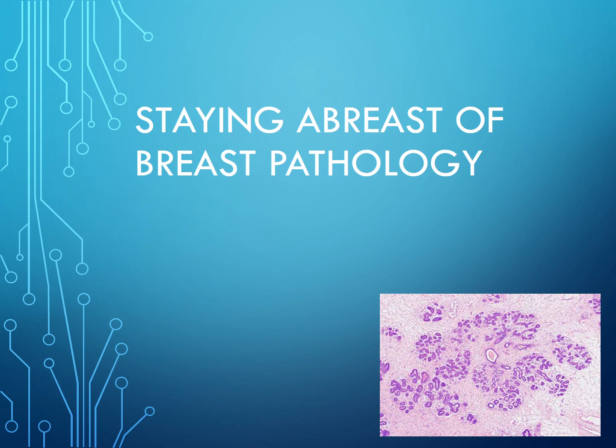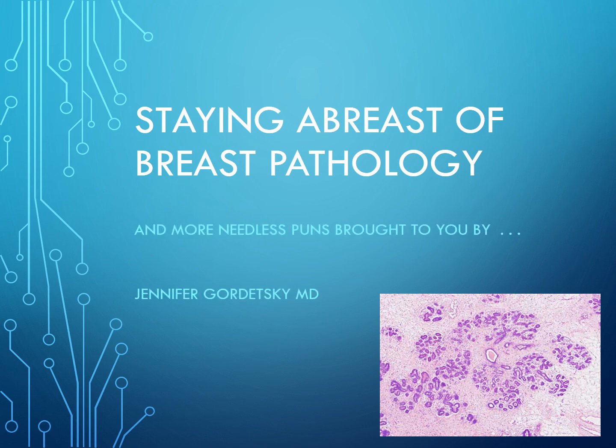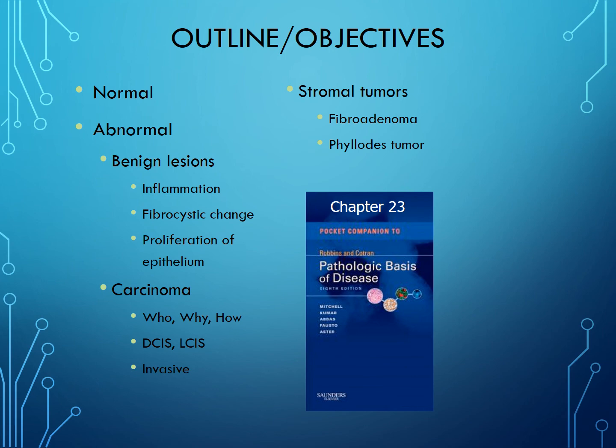Hello! This lecture is titled "Staying Abreast of Breast Pathology," brought to you by your friendly neighborhood pathologist, Dr. Jennifer Gordetsky. We are going to start off with the normal histology of the breast and then move on to the abnormal pathology, which includes benign and malignant lesions. I have a picture here of Robbins Pathology, Chapter 23, which covers the pathology of the breast.